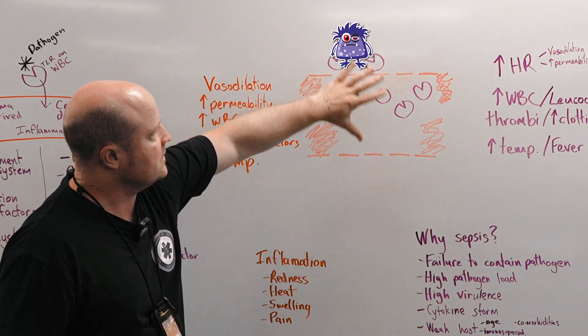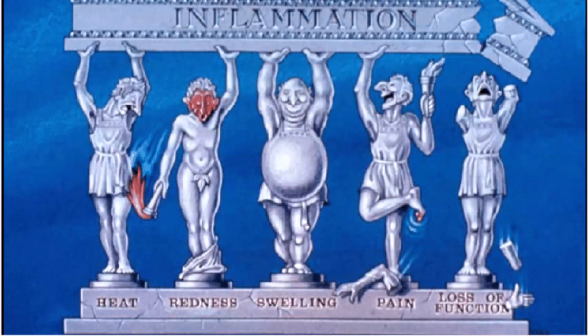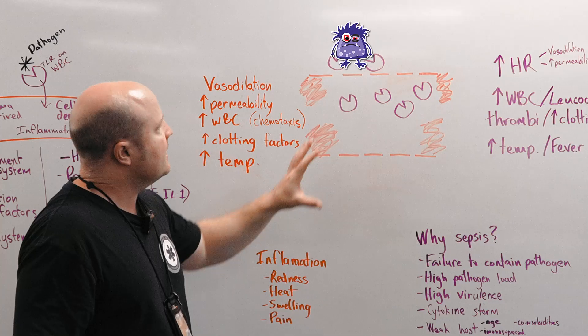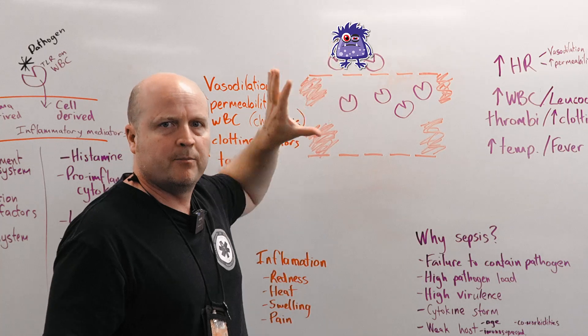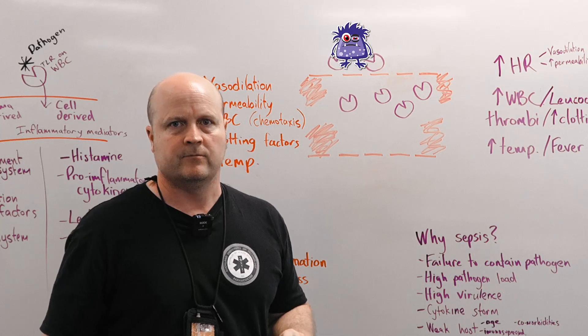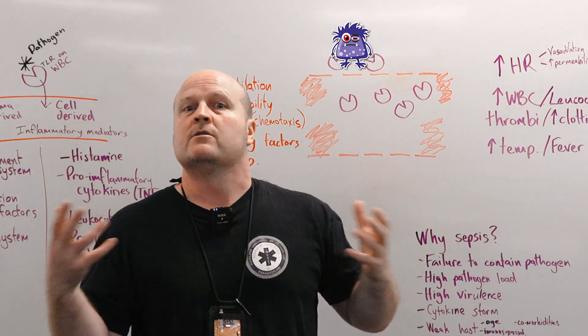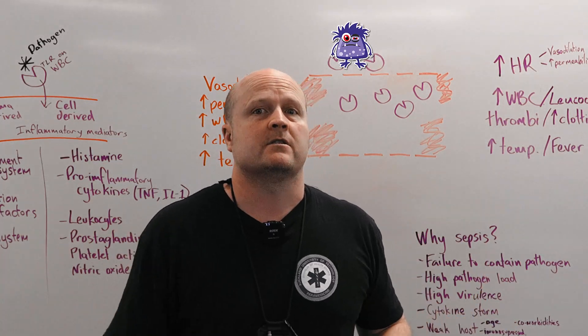So all this inflammation which what we see is redness, heat, swelling and pain. That's the symptoms of inflammation and a local area is going to be perfect for containing and defeating a pathogen. So that's normal local immune response. So how does it go bad and how does it turn to sepsis?